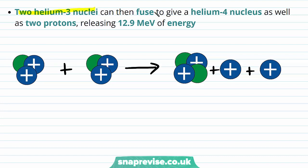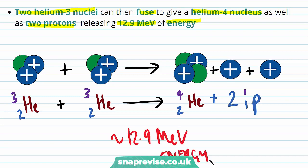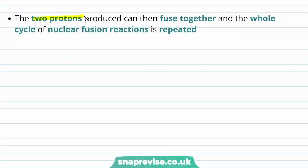Then two helium-3 nuclei can fuse to give a helium-4 nucleus plus two protons, releasing 12.9 mega electron volts of energy. The two helium-3 nuclei each have three nucleons and two protons, and they fuse to form a helium-4 nucleus and produce two free protons.